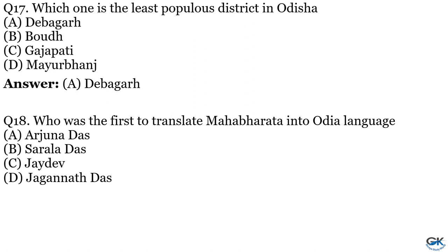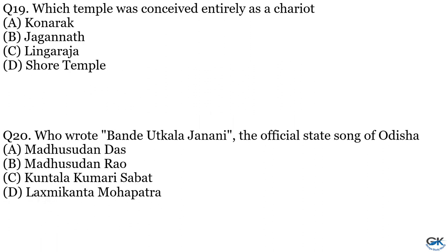Question No. 18: Who was the first to translate the Mahabharata into the Odia language? Option A: Arjuna. Option B: Saraladas. Option C: Chardevuswami. Option D: Jagannath. The answer is Option B, Saraladas. Question No. 19: Which temple was conceived entirely as a chariot? Option A: Konark. Option B: Jagannath. Option C: Lingaraj. Option D: Sun Temple. The answer is Option A, Konark.